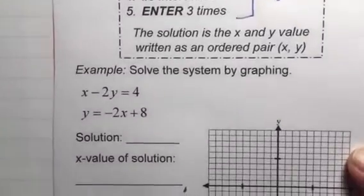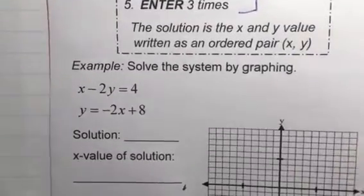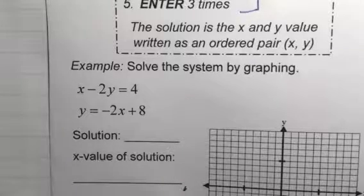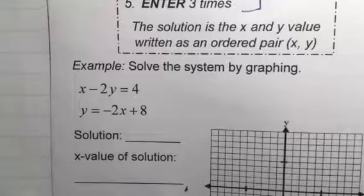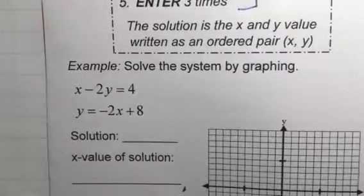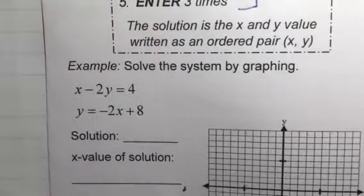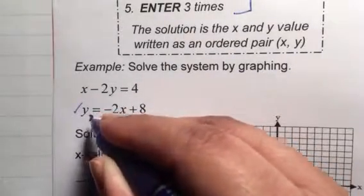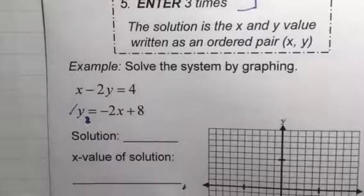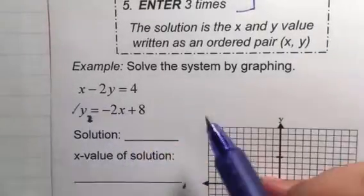Let's look at the example that's in your book. It says solve the system by graphing. Again, this is how we're going to solve this systems. If you look, this second equation is already solved for y. So we're going to put that one in y2. Now this one needs to be solved for y.